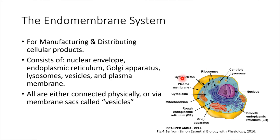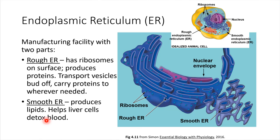The endoplasmic reticulum — if you come over to the picture of the cell, you can see this bluish-purple section that's kind of wrapped around the nucleus. This is the endoplasmic reticulum. It has a couple of different sections we're going to look at next. We will also be looking at the Golgi apparatus, which is in reddish-orange right here. Lysosomes are tiny little things — these little circles. Lysosomes are small packages that can move around throughout the cell. And finally the plasma membrane — we've already talked about that one, and it's part of this endomembrane system.